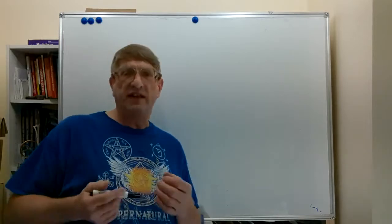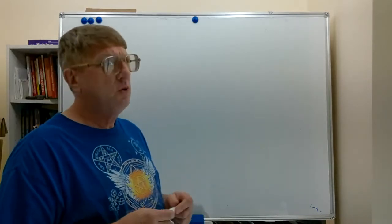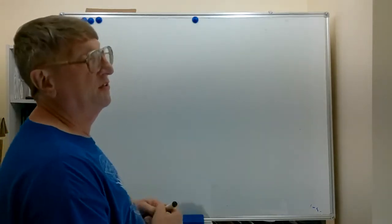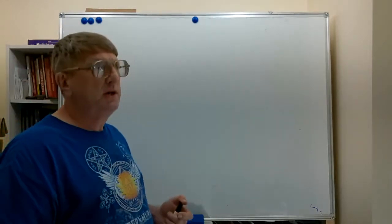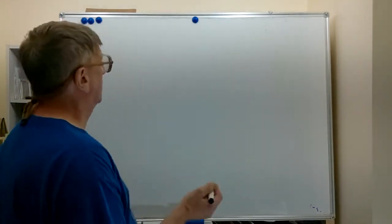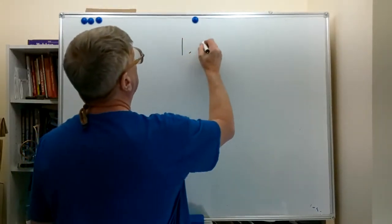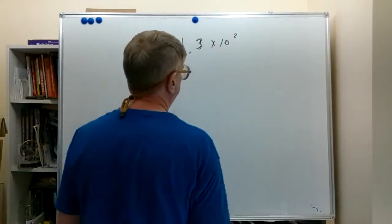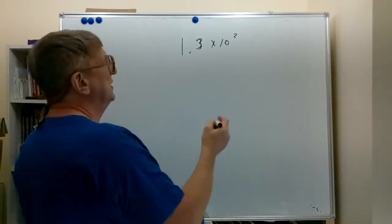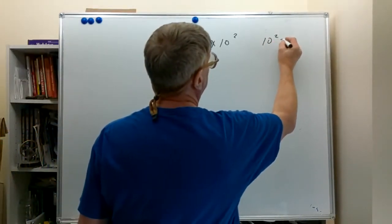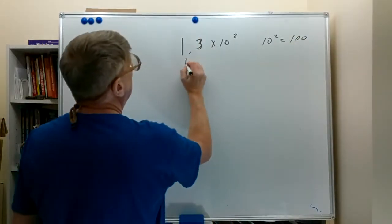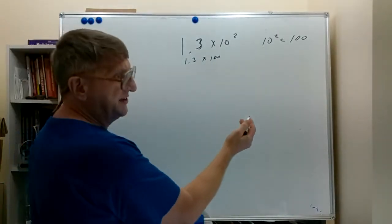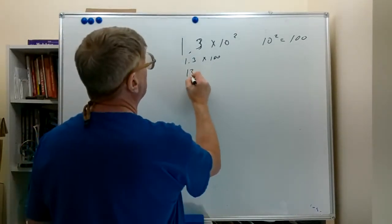The charge of one electron is very small, so we think of charge usually in terms of what we call Coulombs. Let's do a quick talk about scientific notation. If I write 1.3 times 10 to the second, that means 1.3 times 100 — which is 1,300. This is a compact way of writing large numbers, not so important for numbers like 1,300, but when you're talking about very large numbers it becomes more useful.